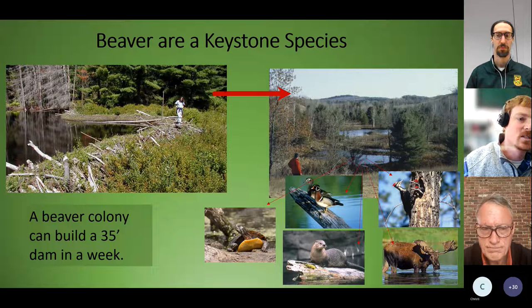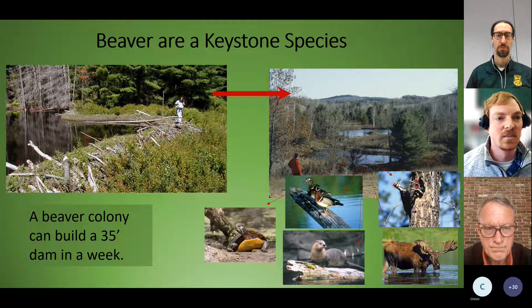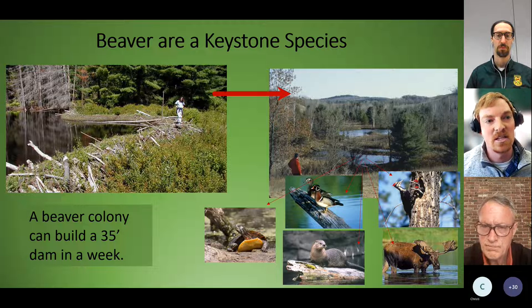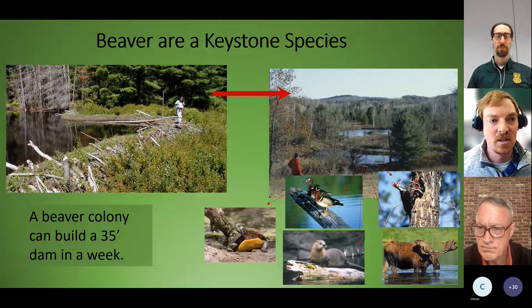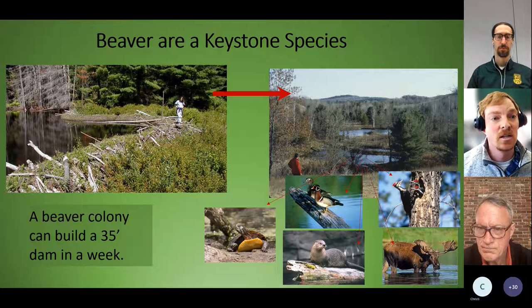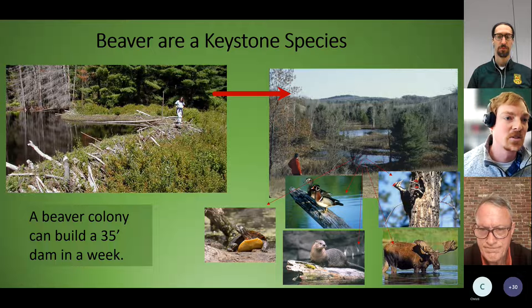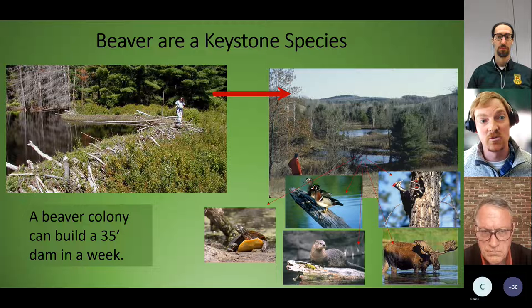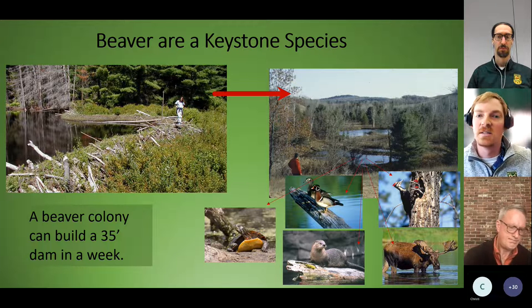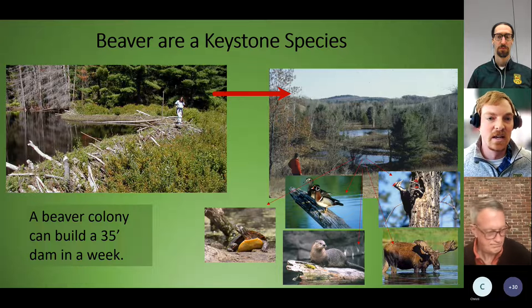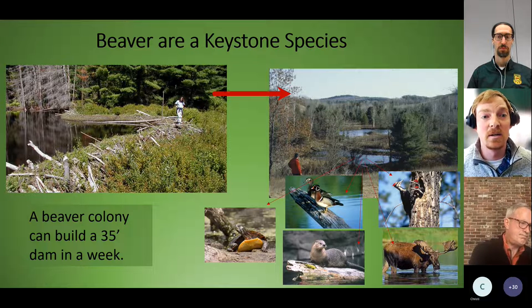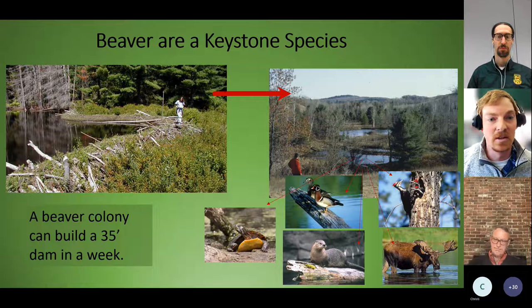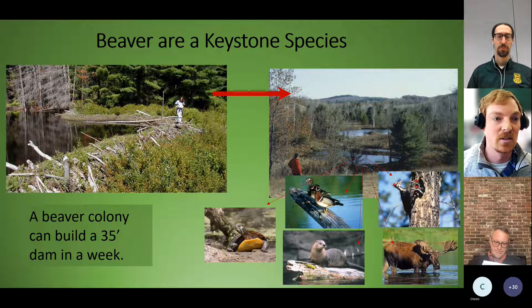These beaver-created wetlands act like filters — slowing water flow, allowing sediments to filter out of suspension, and helping clean the water. They recharge groundwater and aquifers, reducing the effects of drought. When beaver dams hold, they can actually reduce downstream flooding by allowing flood energy to dissipate across the landscape, and they help reconnect streams with floodplains while increasing stream complexity.